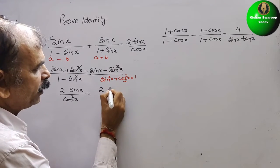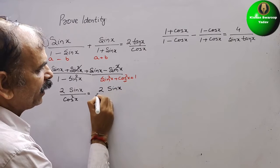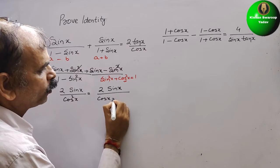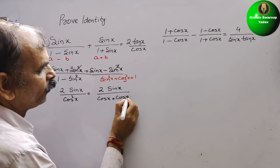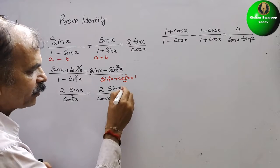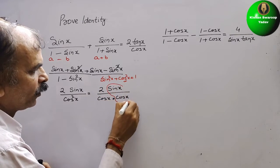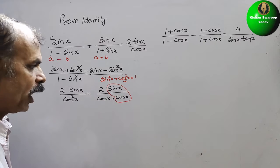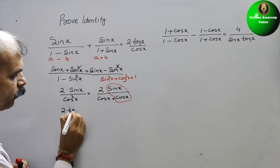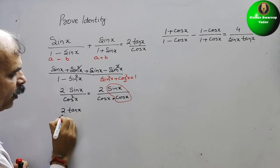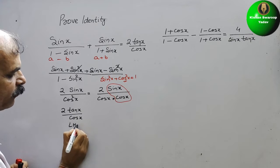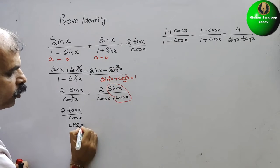So we have 2 sin x / (cos x × cos x). Now sin x / cos x = tan x, so we get 2 tan x / cos x. This is your LHS, and the RHS is also the same. Hence proved.